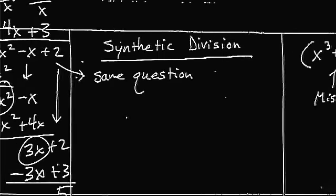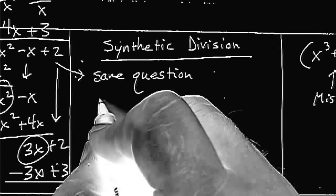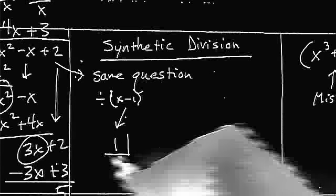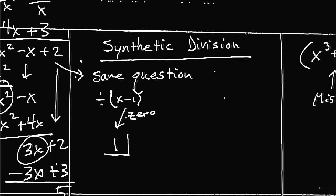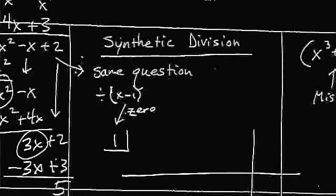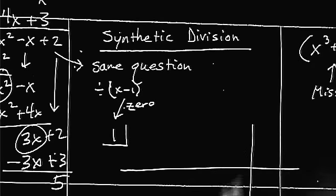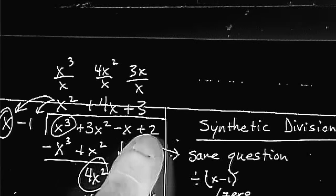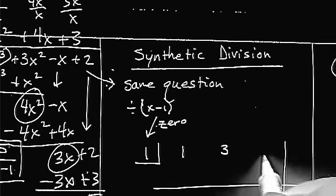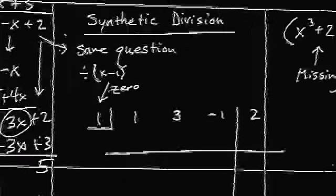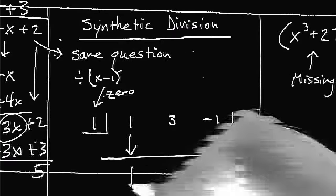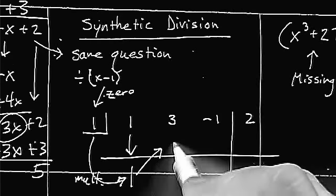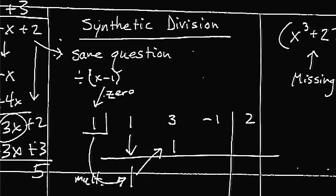Now, there's another type of division from long division called synthetic division that you also have to know. So, I'm going to handle the same question that I did just a second ago. Since we were dividing by x minus 1 in that last question, the very first thing is I take the zero that comes from the factor. And I put it in this little box. And I take the coefficients of what I'm dividing. Coefficients are the numbers in front. So, 1, 3, negative 1, 2. 1, 3, negative 1, 2. The last one goes on the other side of this little line. The first thing I do is I carry down the first coefficient. Here's what I want to do. I want to multiply these two together. And I want to write it in the next row. And then I'm going to add down the column.